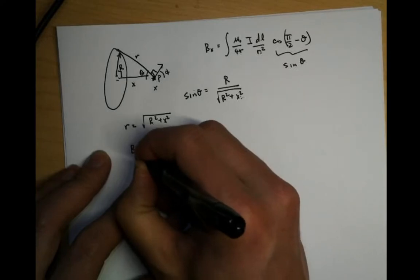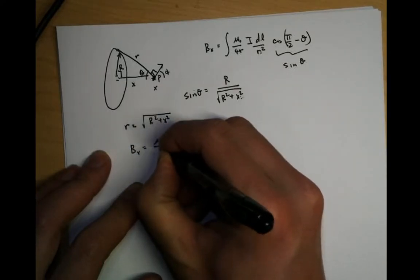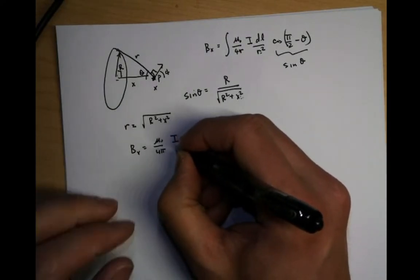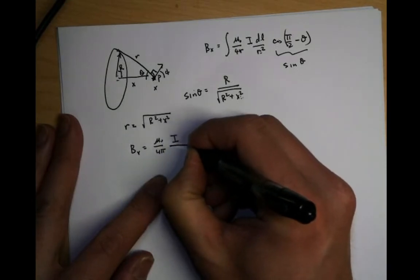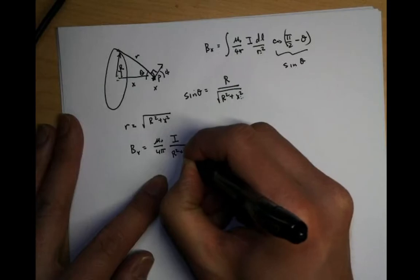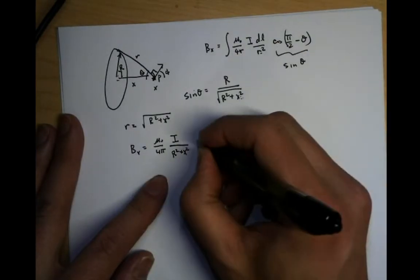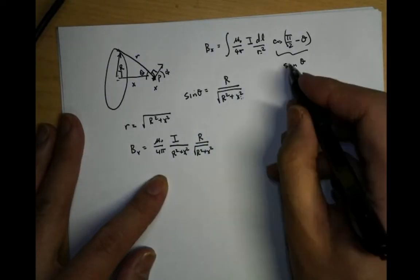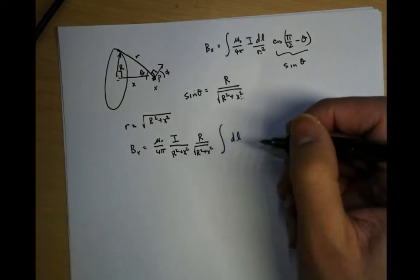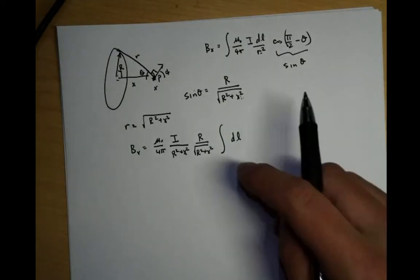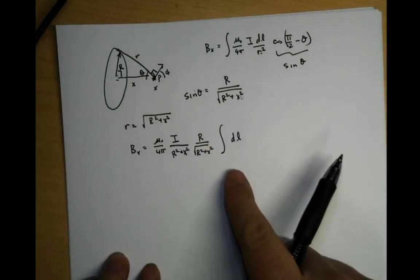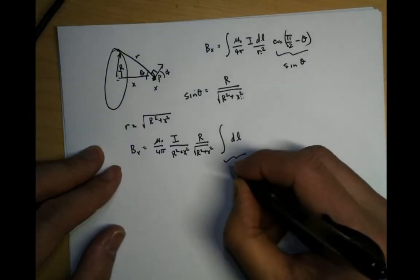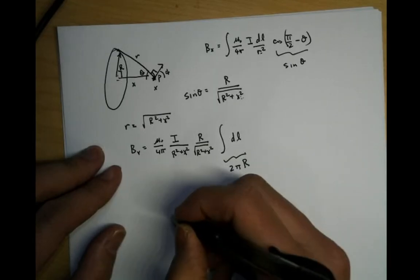So this is Bx equal to mu zero over 4 pi, I, divided by r squared — which is r squared plus x squared — times sine of theta, which is r over the square root of r squared plus x squared. Now there's an integral dl, and since all these things are constants — x is a constant, r is a constant — I can pull them out. The integral of dl is just the length around the circle, which is 2 pi times r.